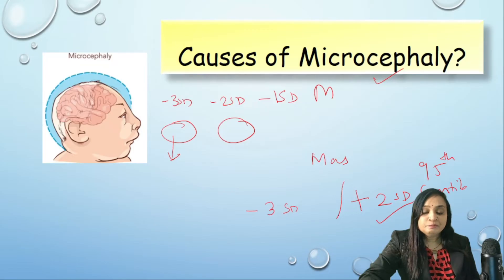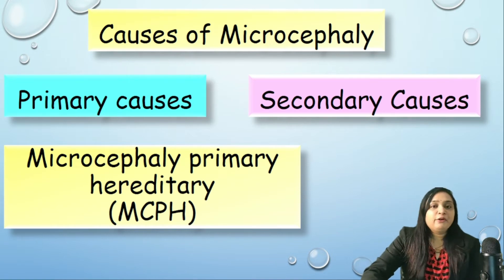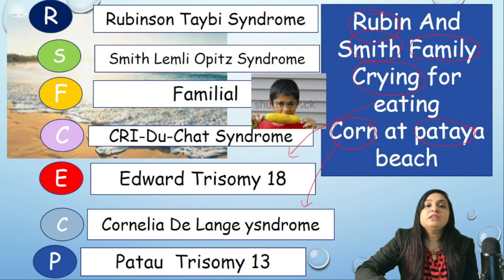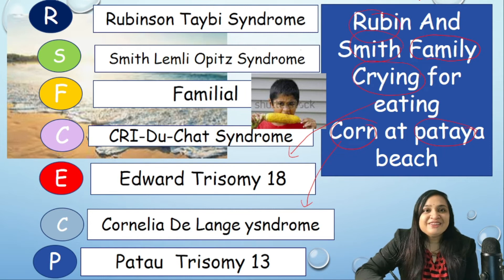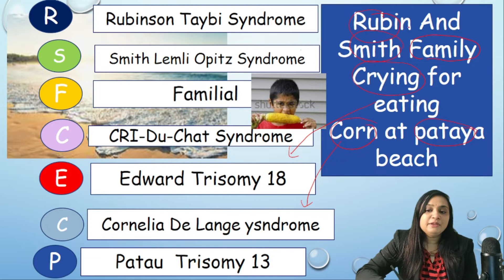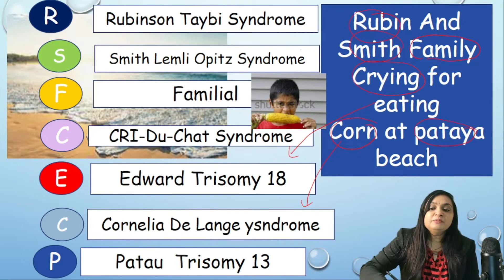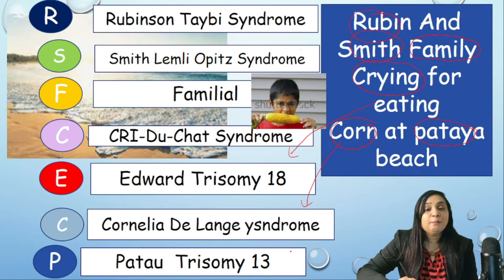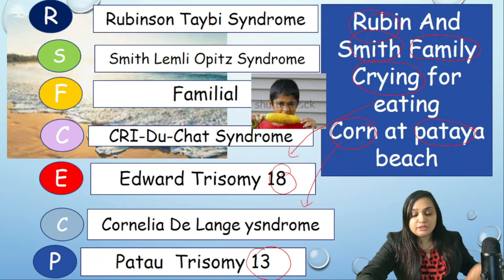Now let's discuss causes of microcephaly. For ease of understanding, we divide them into primary and secondary causes. For primary causes, the first list is syndromes. A simple mnemonic to remember: 'Rubin and Smith family crying for eating Con at Pattaya Beach.' Rubin = Rubinstein-Taybi syndrome, Smith = Smith-Lemli-Opitz syndrome, family = familial, crying = Cri-du-chat syndrome, eating = Edward syndrome (trisomy 18), Con = Cornelia de Lange syndrome, Pattaya = Patau syndrome (trisomy 13).